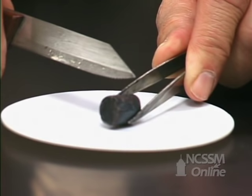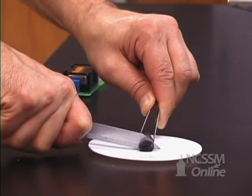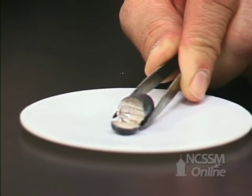Group 1 metals tend to be relatively soft, and we can easily cut the metal with a knife. What we can see is the shiny metallic surface underneath.